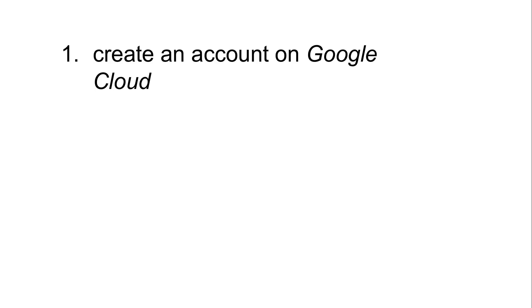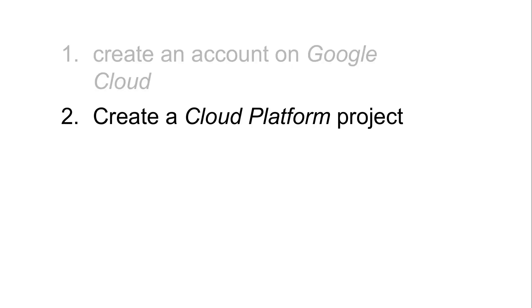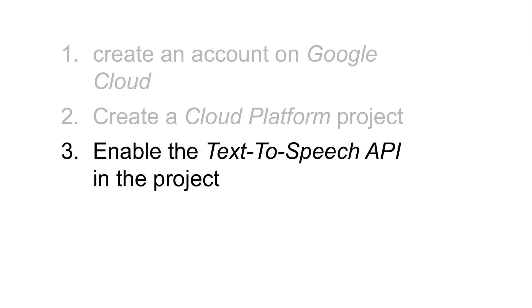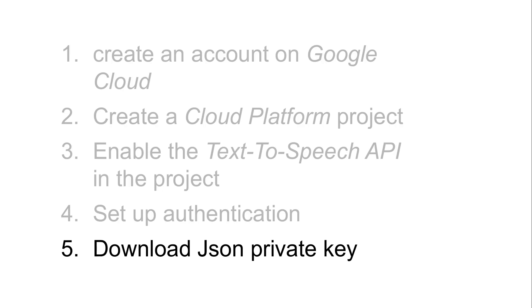Now that you have an overview of the design of the application and how it works, you may be wondering how you can use it. In order to use it you'll first have to set up a Google Cloud application. The first step is to create an account on Google Cloud, then create a cloud platform project and enable the Text-to-Speech API on that project. Then you should set up authentication and download a JSON private key that you'll need in order to access the Text-to-Speech API. The README file in Paper Whisperer has a link with more information about how to set up a Google Cloud application.